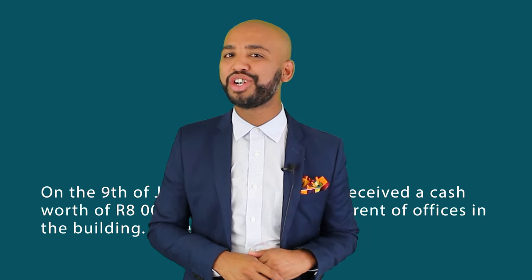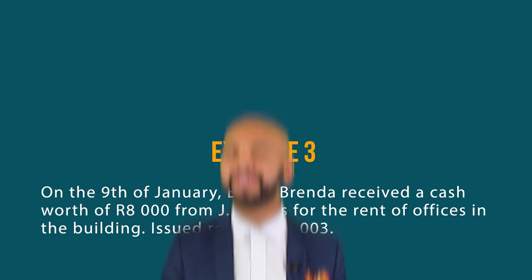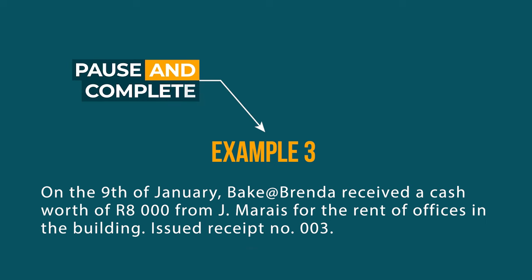Let's see if you can do the next transaction all by yourself. On the 9th of January, Bake at Brenda received cash worth 8,000 rand from Jay Marais for the rent of offices in the building. Receipt number 003 was issued. You've got all the information, so now try it all by yourself.